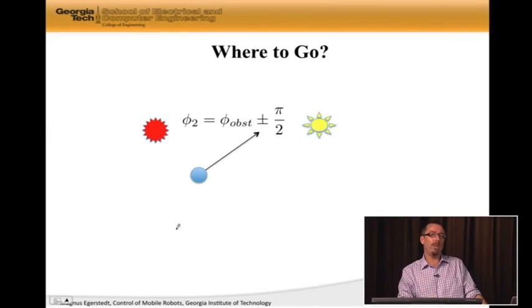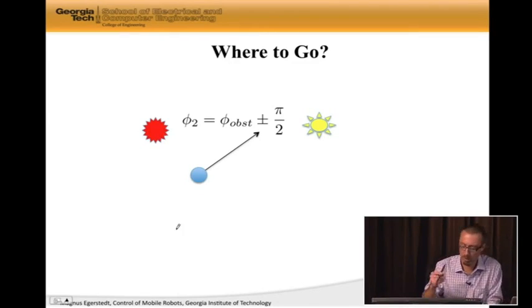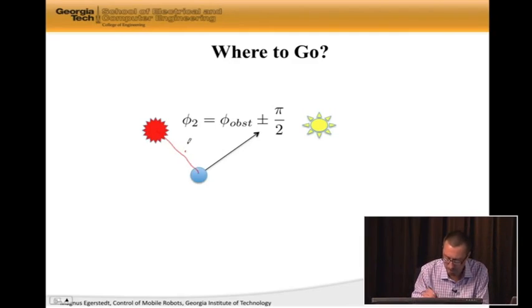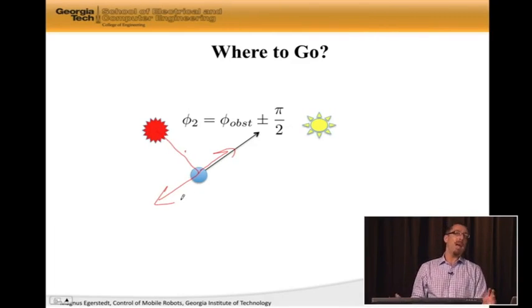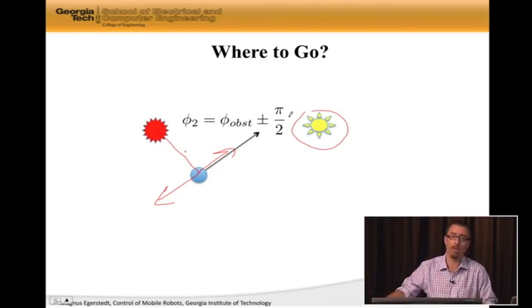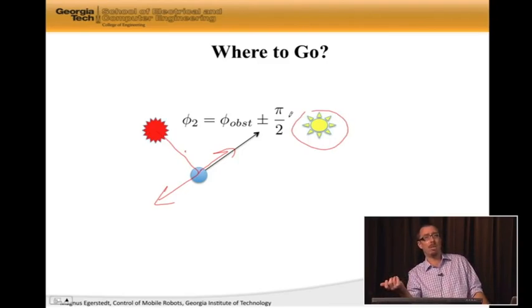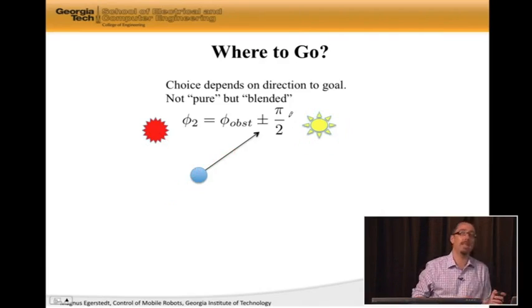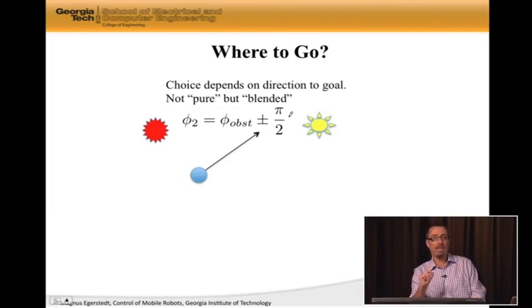Now, this direction is pure in the sense that I don't care where the goal is. I am just going to move away from the obstacle as much as I can. So, I'm going to call this pure avoidance. No notion of where I'm supposed to be going. Well, we had another choice. We said, what if we go perpendicularly to this direction? So, phi two is phi obstacle plus minus pi over two. It means that if I do minus pi over two, I go in this direction. If I do plus pi over two, I go in that direction. And there, here it actually matters if we do plus or minus.